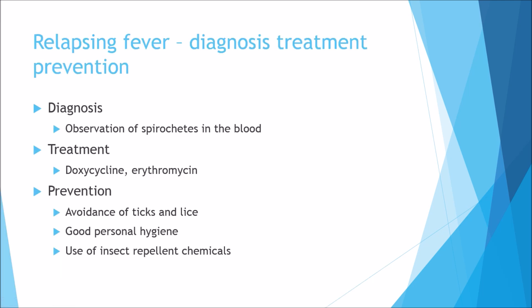For diagnosis, if you look at a blood sample and see the presence of spirochetes, that indicates relapsing fever. For treatment, we use doxycycline; for pregnant women and children, erythromycin is an option worth reading up on. For prevention, avoid ticks and lice using insecticides, good personal hygiene, and insect repellent.